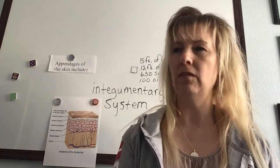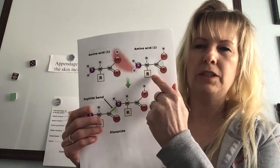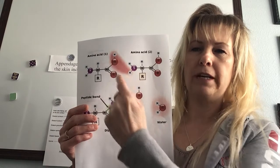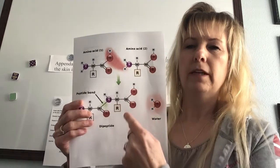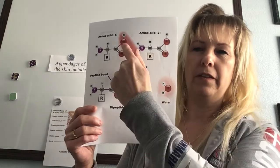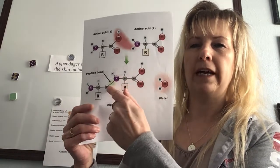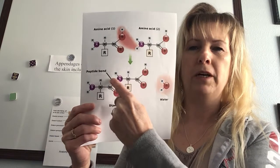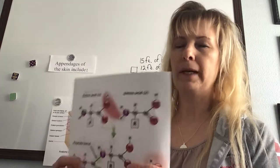Now let's talk about how amino acids form proteins. We take amino acid one and amino acid two, and we remove one oxygen and two hydrogens — the carboxylic acid end combines with the amine group of the next amino acid. The oxygen and two hydrogens leave as water, and then the amino acids bond together. When the amine group bonds with the carboxylic acid, they form what we call a peptide bond.